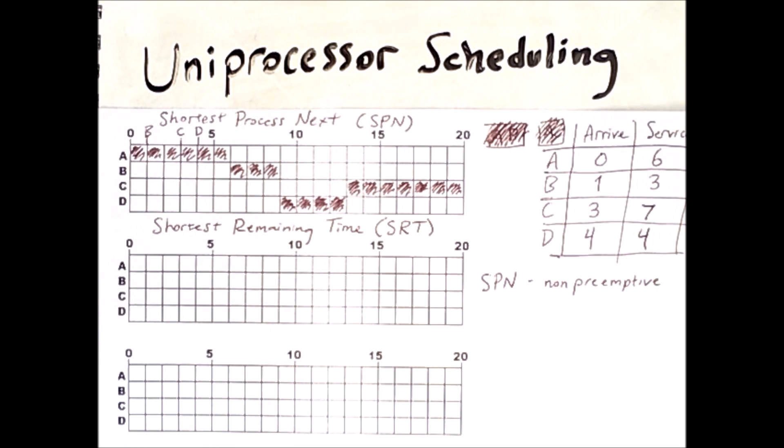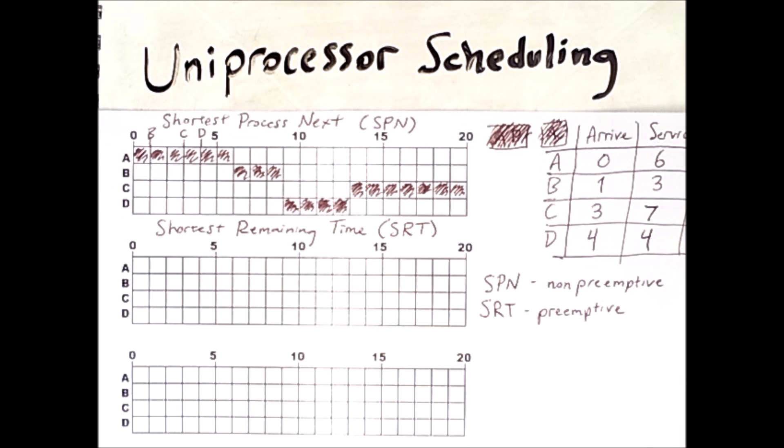So Shortest Remaining Time remedies this issue by being preemptive. This means that whenever a new process shows up, the algorithm will reassess which process should be running. If the newly arrived process has a shorter time to run than whatever is currently running, it can interrupt it. The result is as follows.